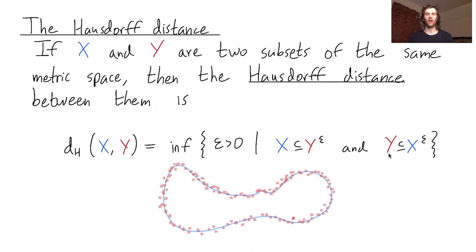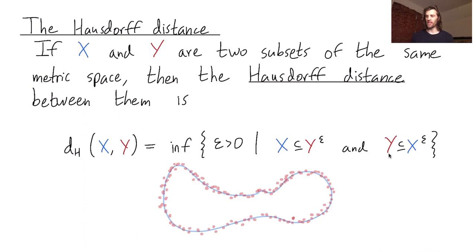I want to define the Hausdorff distance between these two sets, x in blue and y in red. The Hausdorff distance is the infimum over all epsilons such that if you thicken y by epsilon it contains x, and if you thicken x by epsilon it contains y.